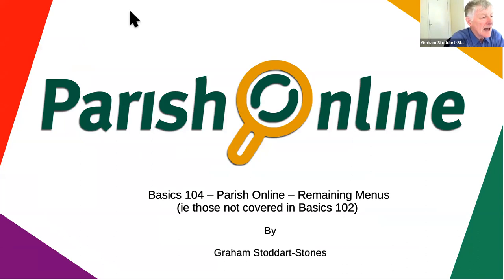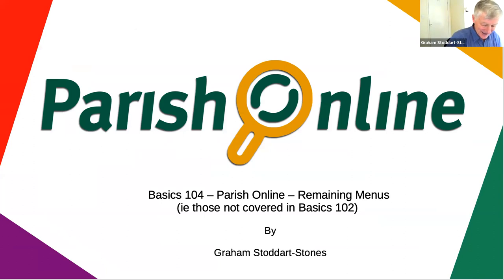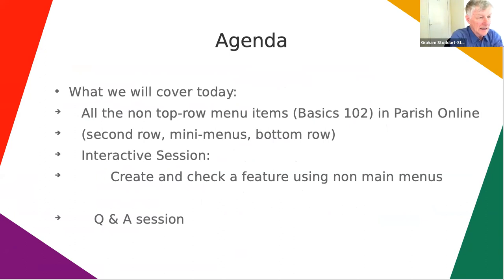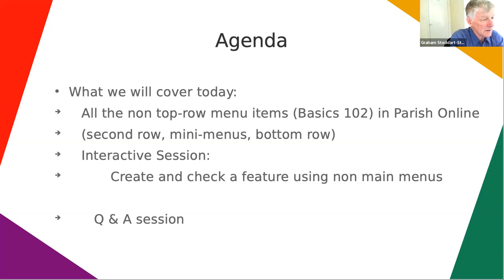You're all seeing this in full screen glory, just checking you're expecting to see Basics 104 - the menu items we didn't cover in 102, so now is the time to shout out if you thought this was going to be something different. You've all seen this before so I'm not going to waste time on it. You will get a copy of the video and the presentation afterwards. We're going to be looking at all the menu items not in the top row of Parish Online, including anything in the second row, any mini menus that pop up from inside the system, and all the menus on the bottom row. Towards the end we'll go interactive and see if you've remembered anything I've been saying this afternoon - it'll be like a quiz.